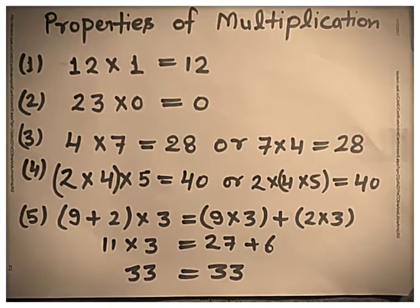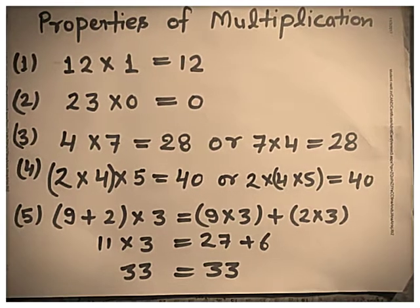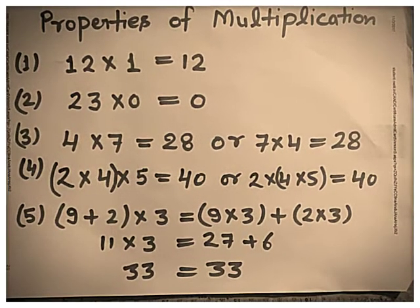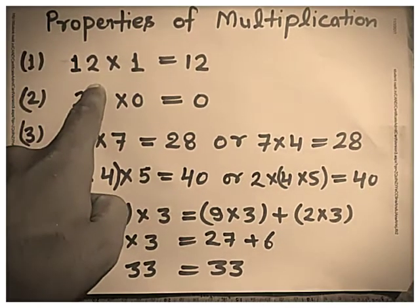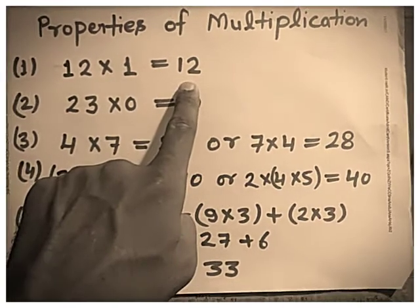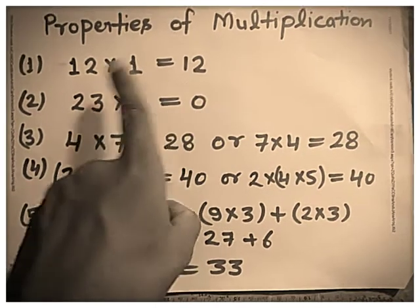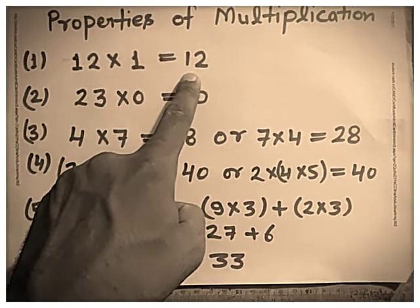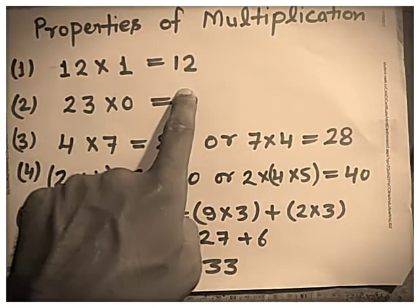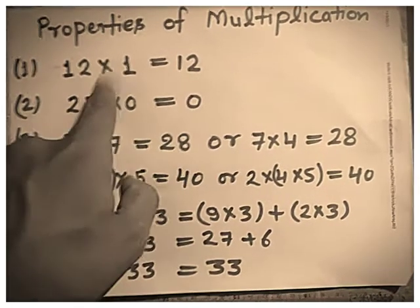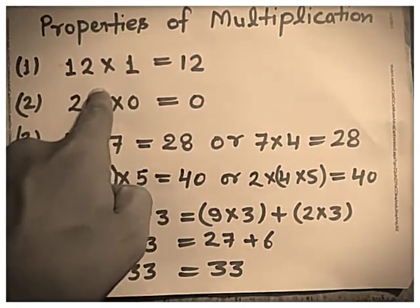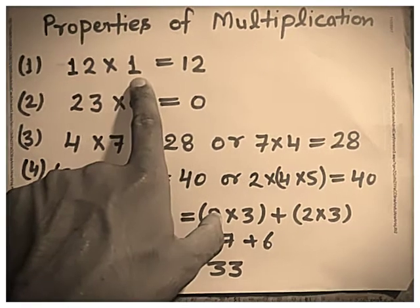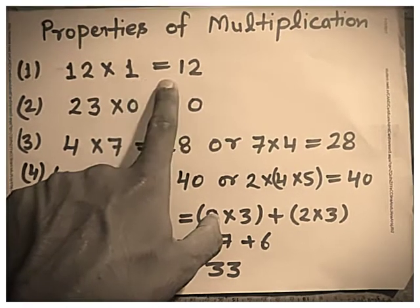Now, properties of multiplication. The first property of multiplication is: the product of a number and 1 is the number itself. See the example: 12 multiplied by 1 is equal to 12. It means when we multiply a number by 1, we get the number itself. 12 ones are 12, 13 ones are 13, 100 ones are 100.